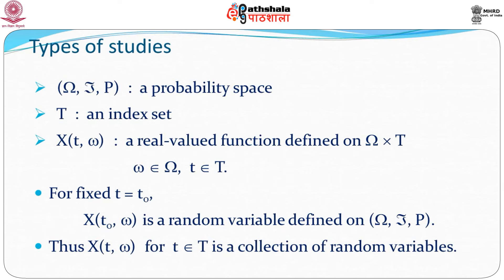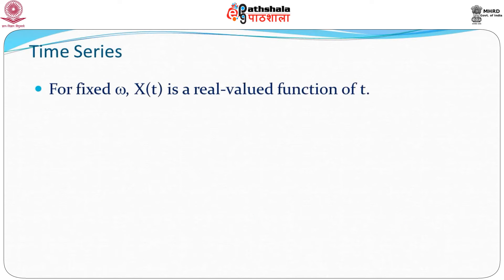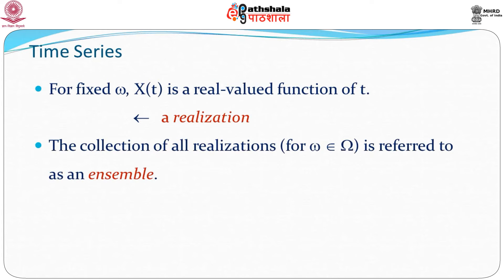When we change t, we have a set or collection of random variables. On the other hand, if we fix ω, then x(t) is a real-valued function of t only, and we call it a realization of a time series. The collection of all realizations — that is, for different values of ω — is referred to as an ensemble.